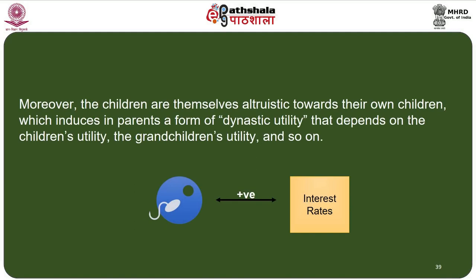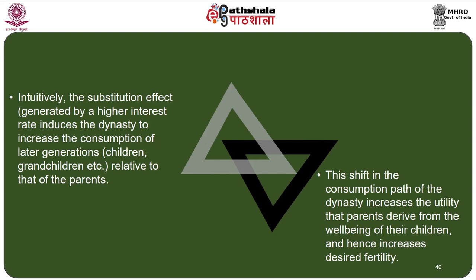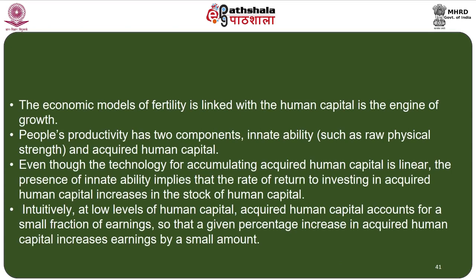Moreover, children are themselves altruistic towards their own children, which induces a form of dynastic utility in parents that depends on the children's utility, the grandchildren's utility, and so on. The theory states that fertility should be positively related to interest rates: a higher interest rate generates a substitution effect that induces the dynasty to increase the consumption of later generations relative to parents, thereby increasing the utility parents derive from their children's well-being and hence increasing desired fertility.